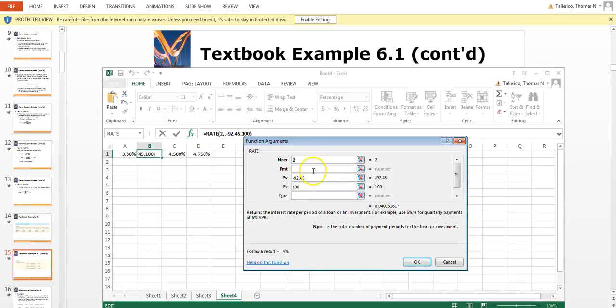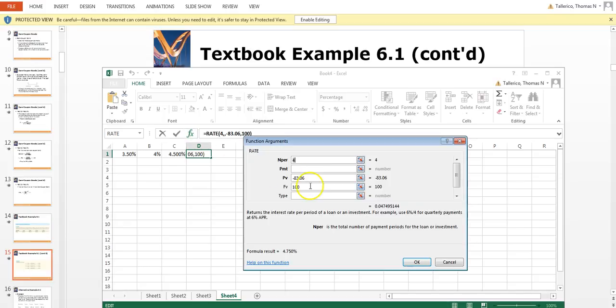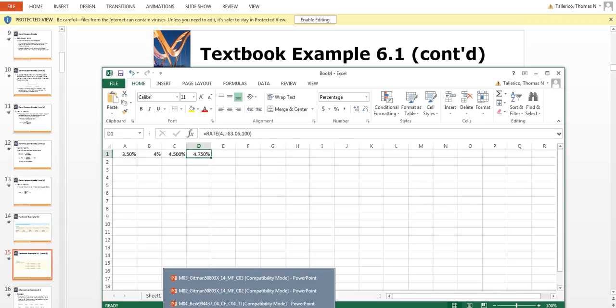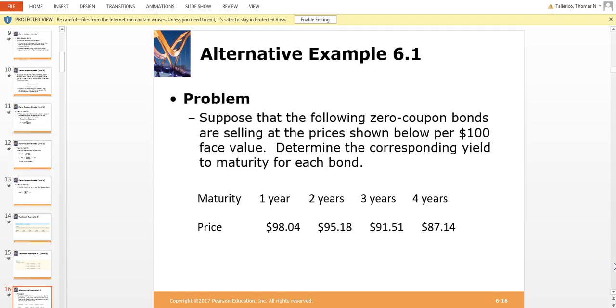This came out to four percent, right? Here's the current price, face value, two years. And here is 4.75 for that last one. So all you do is just pop these three numbers in to get the rate or yield to maturity. I just wanted to show you that.